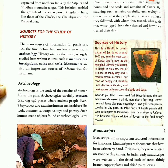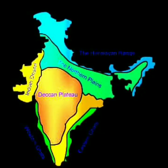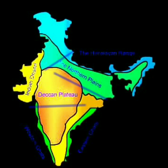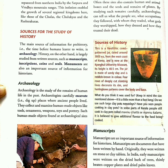The Deccan Plateau. In this figure we can clearly locate the Deccan Plateau — it is here, and this represents the northern plains. The Deccan Plateau is a large plateau that covers most of South India. It is triangular, surrounded by three mountain ranges: the Vindhya Hills on the north, the Western Ghats on the west, and the Eastern Ghats on the east. It extends over eight Indian states. The isolation of the Deccan Plateau by the mountain ranges enabled the growth of several regional kingdoms here, like those of the Cholas, the Chalukyas, and the Rashtrakutas.